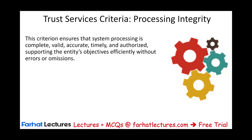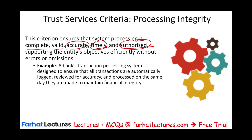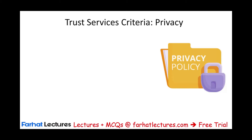Processing integrity: this criterion ensures that system processing is complete, valid, accurate, timely, and authorized, supporting the entity's objectives efficiently without errors or omission. Complete means all transactions are being processed. Valid means we're processing actual transactions. Accurate and timely means transactions are processed correctly and on schedule. Authorized means only approved transactions are processed. For example, a bank transaction processing system is designed to ensure all transactions are automatically logged, reviewed for accuracy, and processed on the same day they are made to maintain financial integrity.